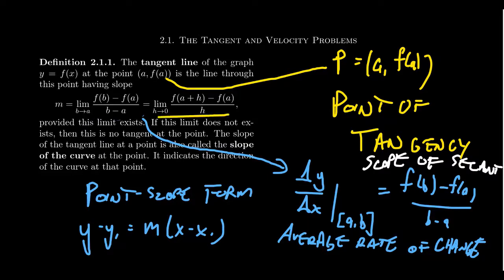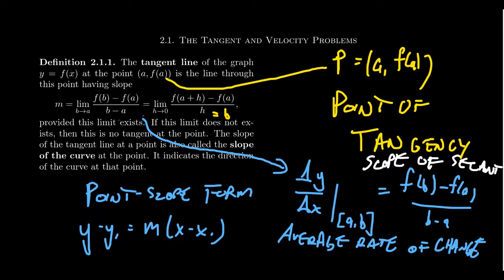What we are doing for the slope of the tangent line is computing the limit as b approaches a of this secant slope — the average rate of change — and we claim that will be the slope of the tangent line. Written slightly differently, this is equivalent to the limit as h approaches 0 of f of a plus h minus f of a over h. If h is the difference between b and a, then b itself is just a plus h. This parameter h represents the distance between the two points, and this is a form we'll use more in the future.